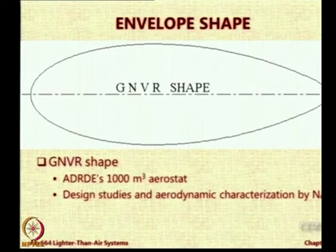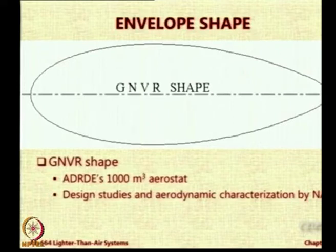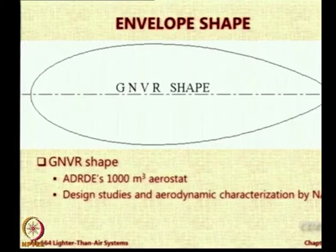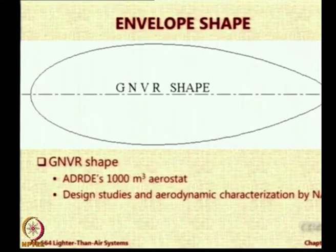First question is: why is the envelope shape important? What does it affect? One is drag — you would want a shape with low drag, a better aerodynamically shaped envelope. What else does shape affect? The maximum dimensions — length and height — will be decided by the shape. The shape you choose decides the storage space, the hangar and the clear area required to operate. If you go for spherical, you will have the least height and the least width for a given volume. You cannot play with the volume because volume decides the buoyant force — density difference times volume. So the best shape from the point of view of size is spherical, but it has very poor drag characteristics.